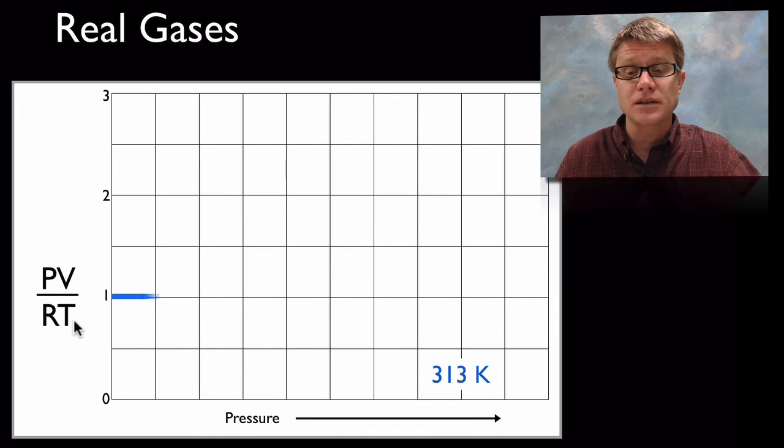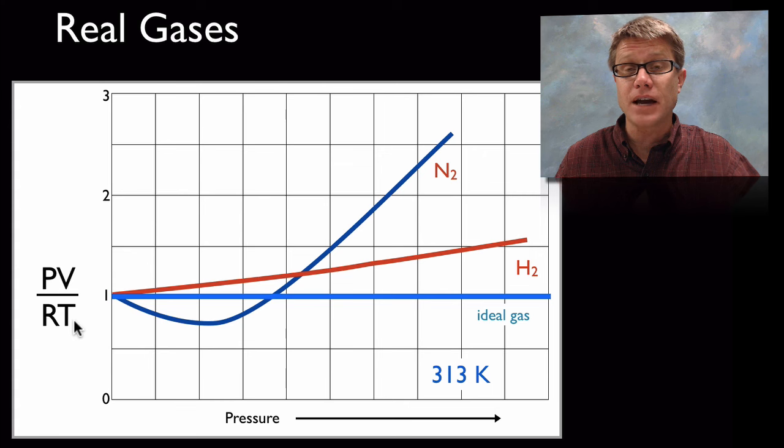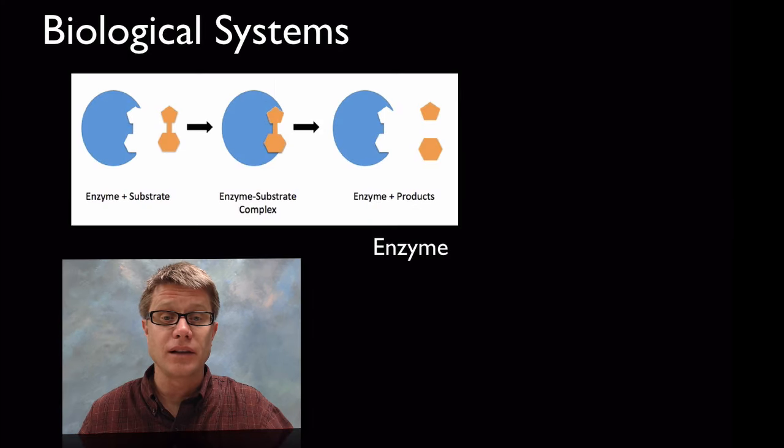We could look at different gases at 313K as well. Let's look at hydrogen versus nitrogen. You can see that hydrogen is going to be more like an ideal gas, and that has to do that it's a smaller mass and it's going to move more readily.